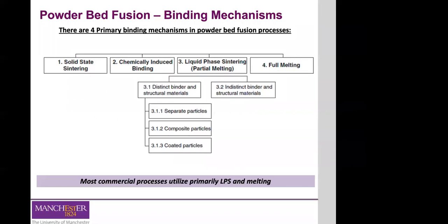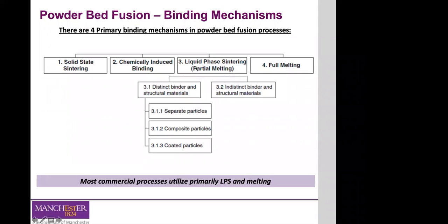The other system we looked at is powder bed fusion. There are different additive manufacturing techniques under this classification, and we focused on selective laser sintering. In terms of the binding mechanism, there are four types, but the one to know is liquid phase sintering. The 'liquid' in the name refers to the binder material, which is melted and liquefied when the laser sinters the particles.